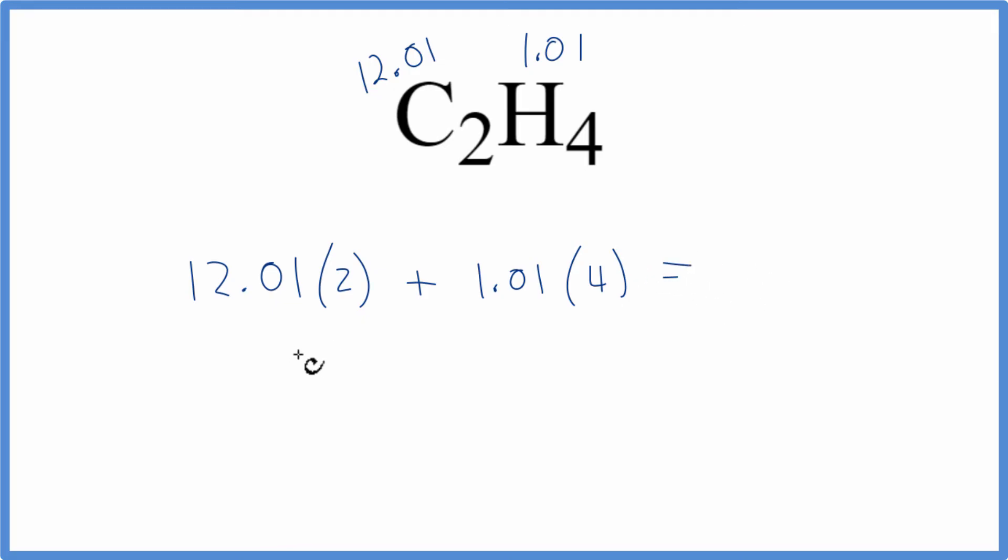We do that, and we get 24.02 plus 4.04. And our final molar mass for C2H4 is 28.06. And here we'll put our grams per mole.